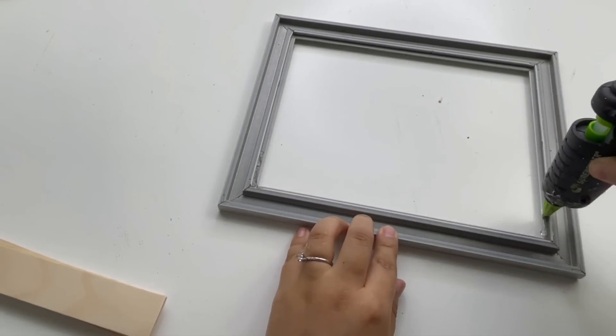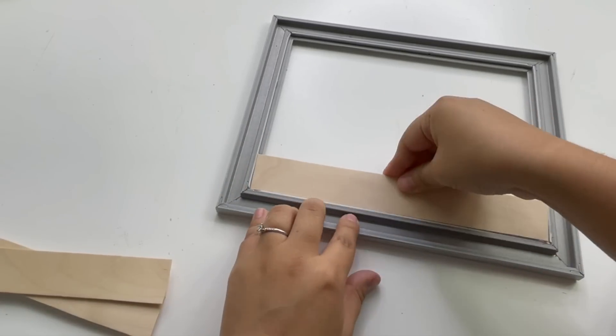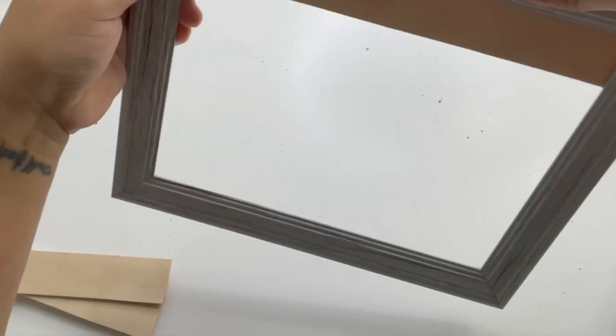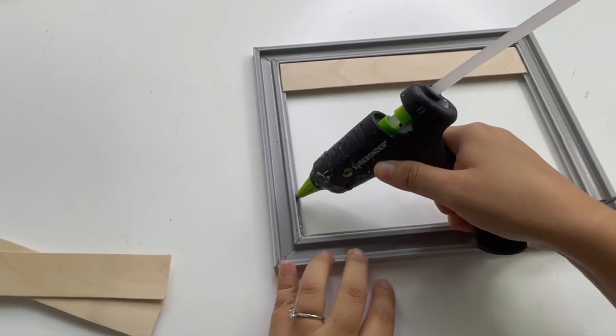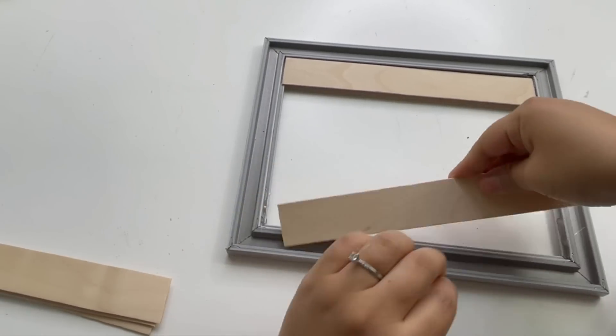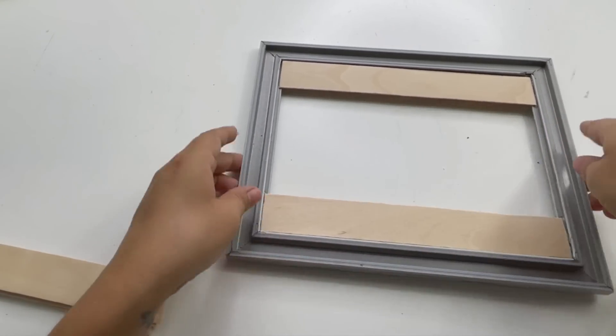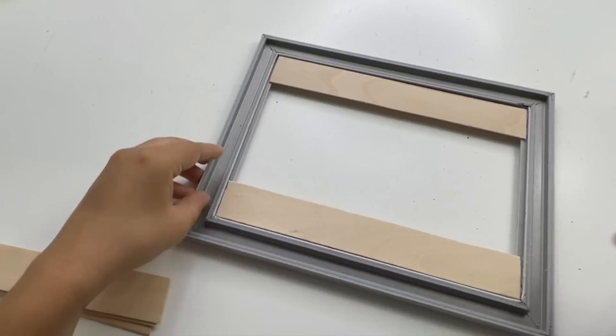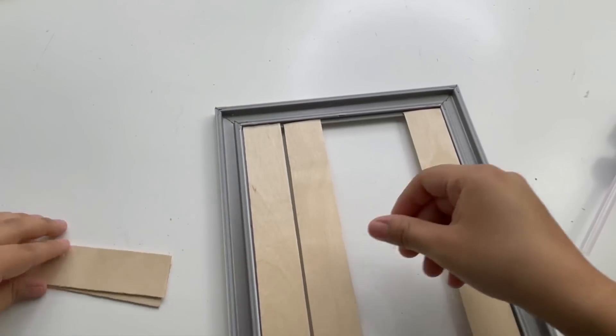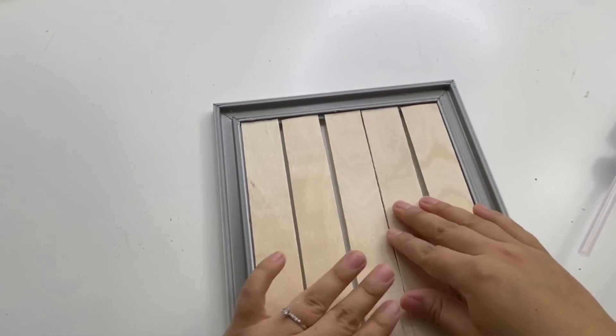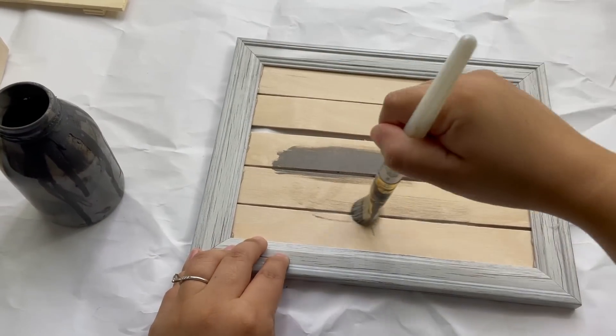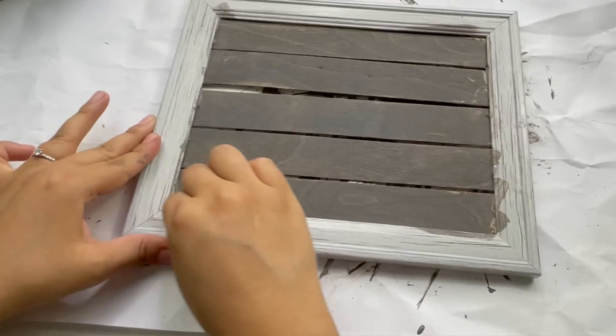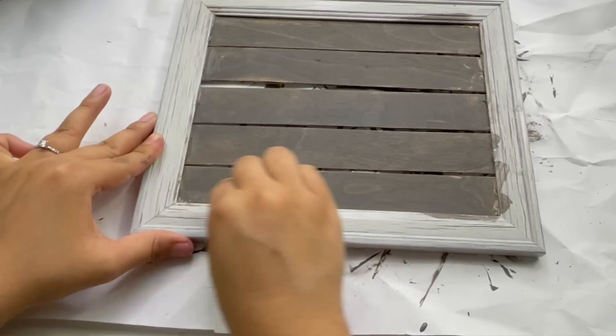To glue the popsicle sticks I'm using hot glue. Now one thing I wish I would have done was like measure in between each popsicle stick, like have like a divider, I think that's how you say it. Because when I glued these, I accidentally glued them very uneven, but I still like how that looked. As you can see, one of them looks way too far that way.